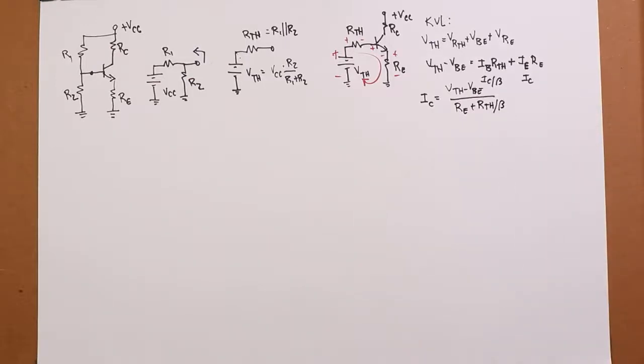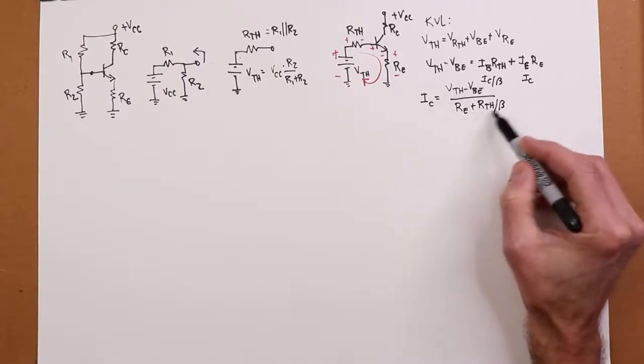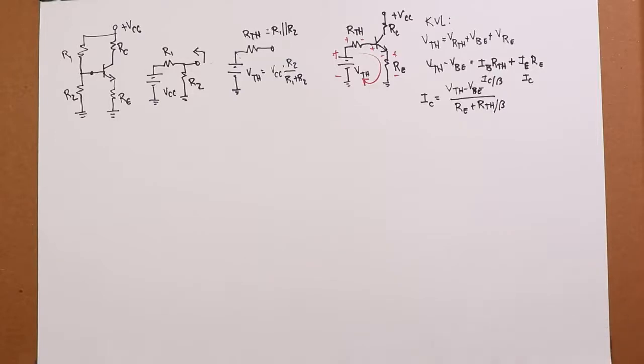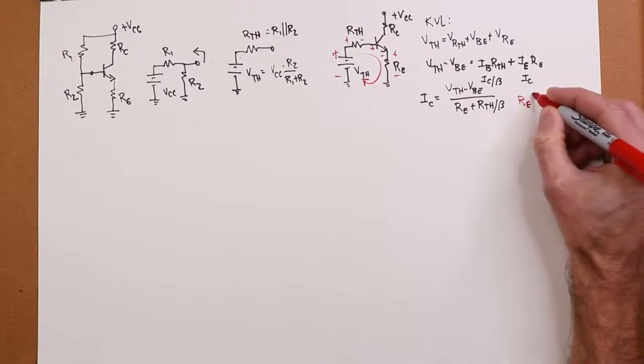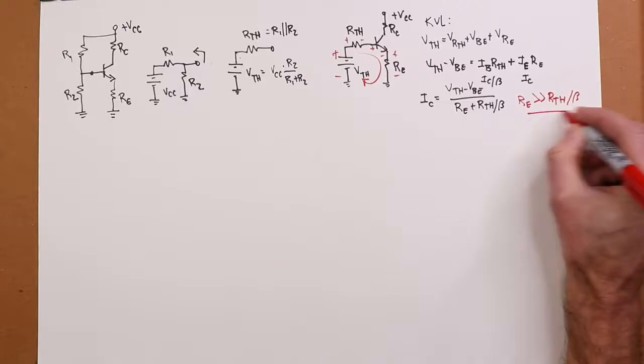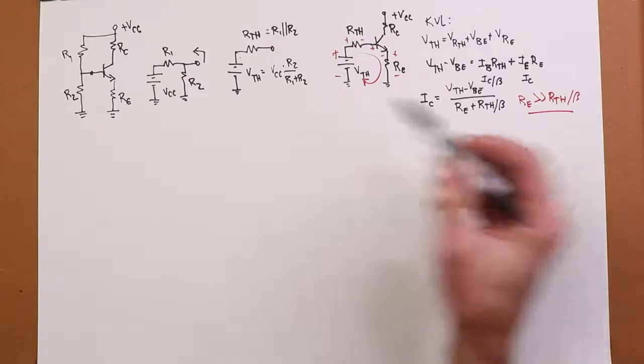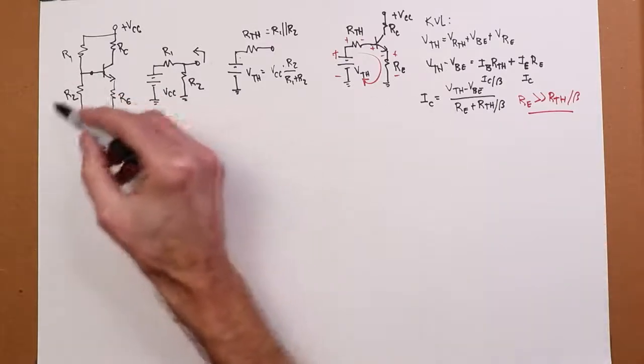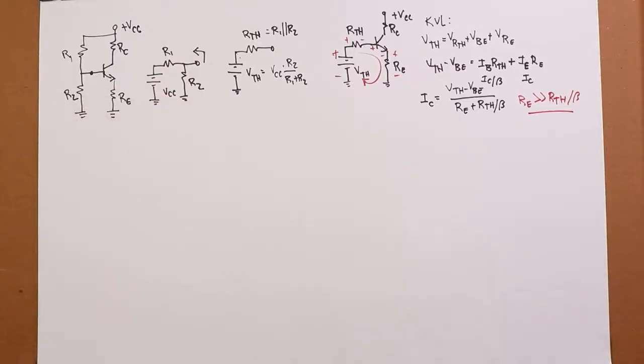Now, this should look familiar. This is very similar to what we found for our two-supply emitter bias. We have V-thevenin instead of VEE, and we have R-thevenin instead of RB. And it's, again, true that if we can make RE a lot bigger than R-thevenin over beta, beta doesn't make much difference. In other words, we will get high stability. So practically speaking, with typical betas, if we can make the R2 around the same size or smaller than RE, that's what we're going to wind up with.